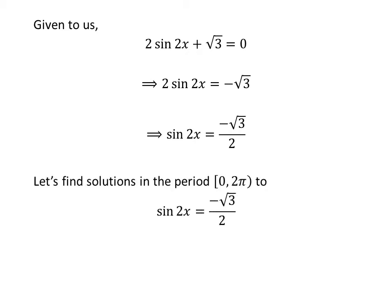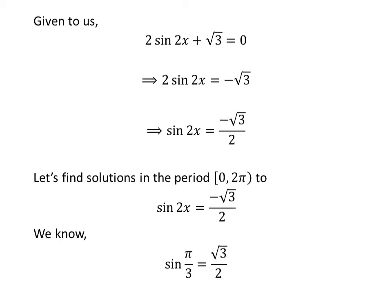Let us find the solutions to the equation sine of 2x is equal to minus square root of 3 upon 2. We know the value of sine of pi upon 3 is square root of 3 upon 2.